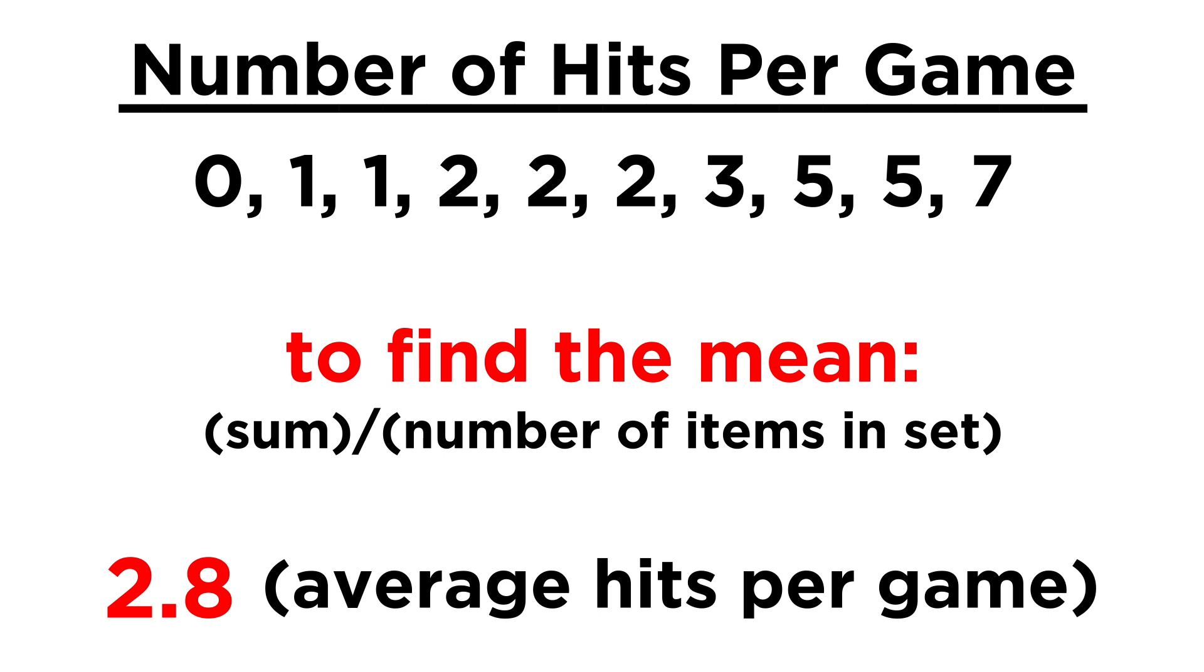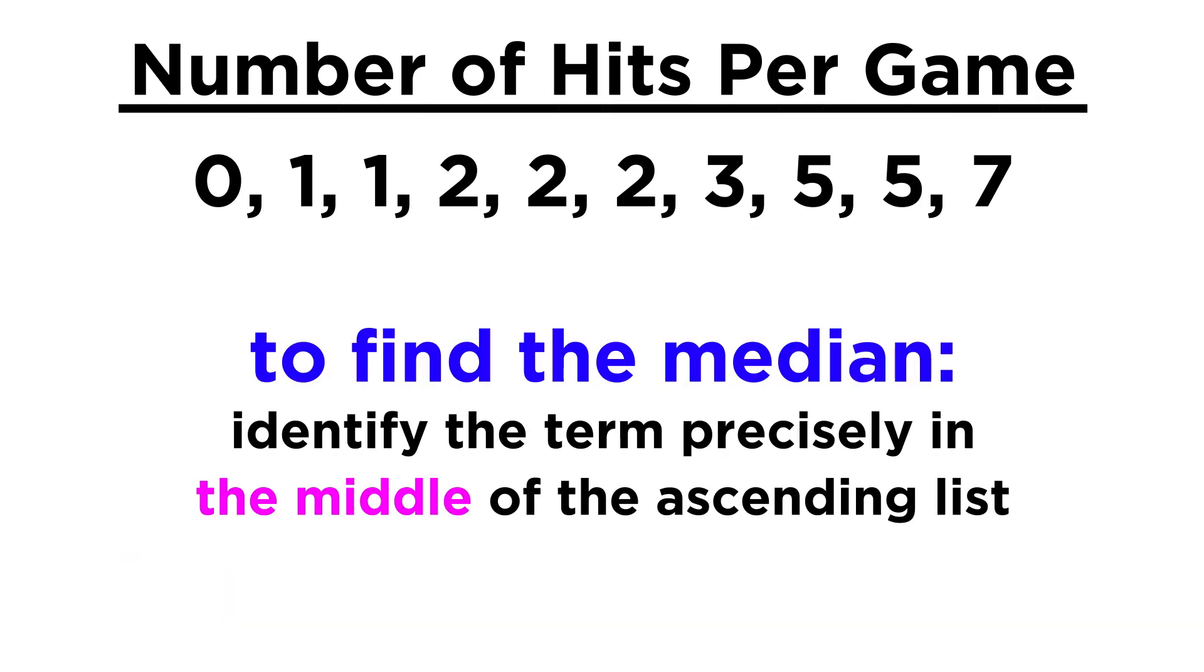But there are other values we can identify that could be of use. The median is the value right in the middle of the dataset when the values are listed in ascending order. If there are three values, it's the second one. If there are five, it's the third. For any set with an odd number of values, it's the one right in the middle.